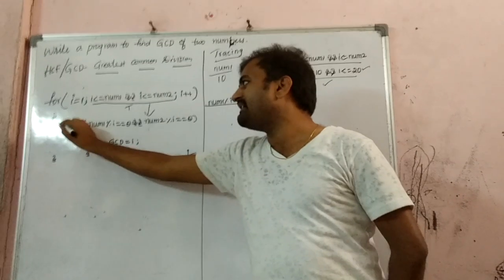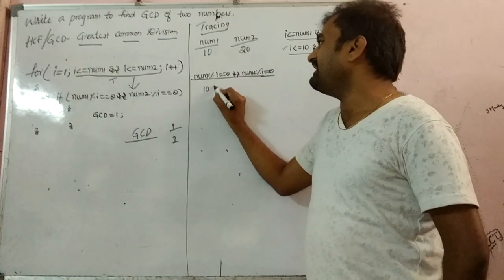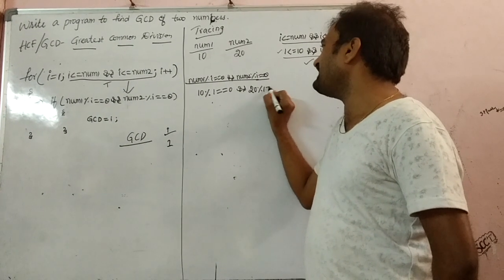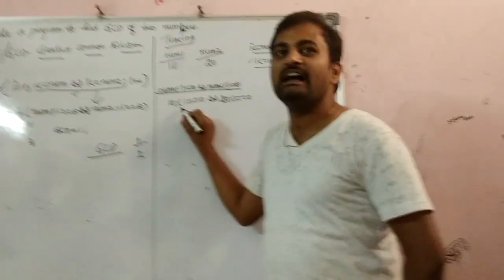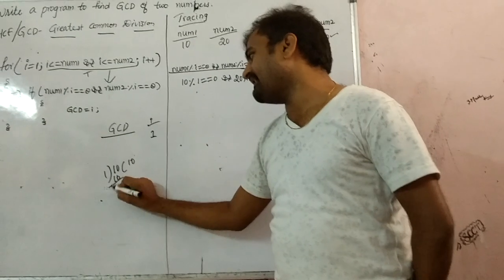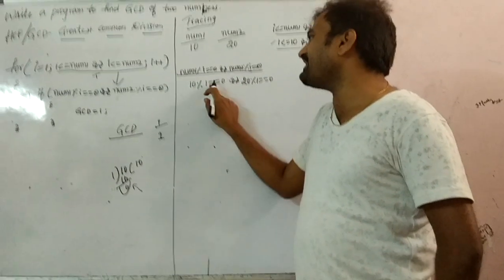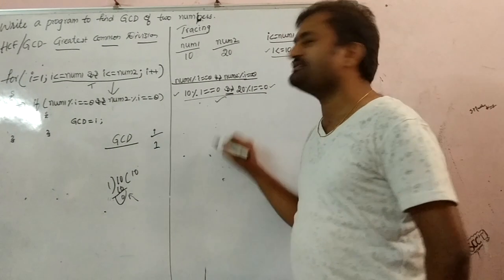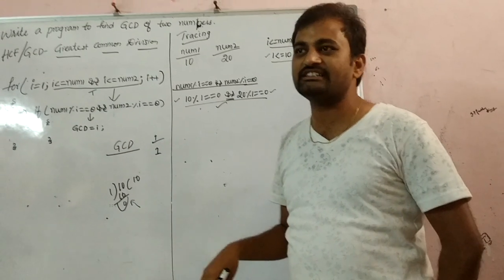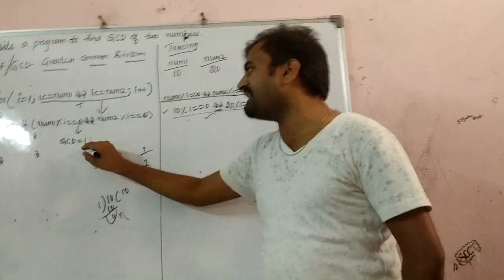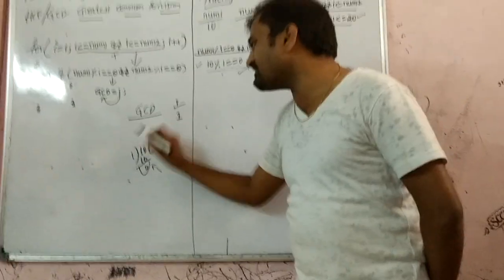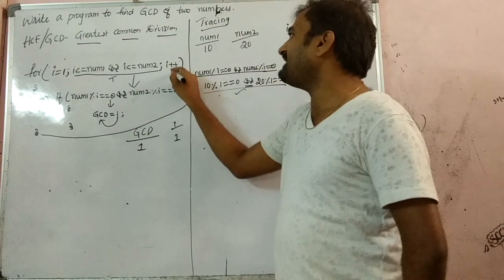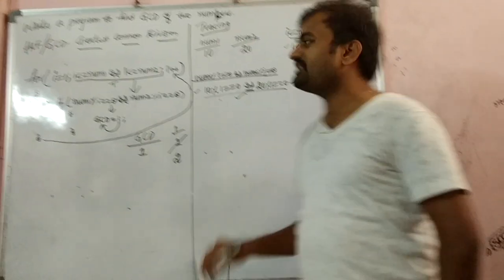So in the loop, the first statement is the if condition. Now come into the if condition. num1 is 10. So 10 modulo i — what is i? 1. So 10 modulo 1 equals 0, and in the same way 20 modulo 1 equals 0. So 0 equals 0 is true and 0 equals 0 is true. Again this is logical AND, so this all becomes true. Whenever it is true, you enter into the if condition statement. What is there? gcd equals i. Now i is 1, so gcd also becomes 1.